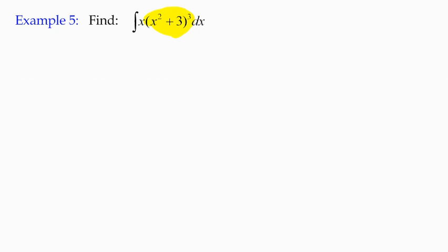What we do have, based on the previous slides, is a composite function: x² + 3 being the inside function raised to the power of 3, and the other term, the x, is a derivative of x² + 3. It's the derivative of the inside function. This is going to make it relatively straightforward to solve. So what we do is substitute the inside term.